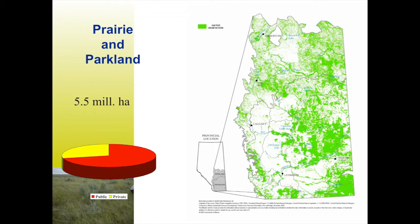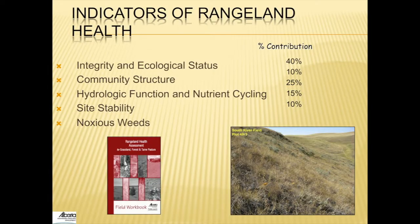Grassland ecosystems are considered the most altered of our natural landscapes. An important development in the past decade that has found its way into the reclamation world is the development of the rangeland health assessment protocol. This was developed for grasslands, for grazed forests, and for tame pastures as well.